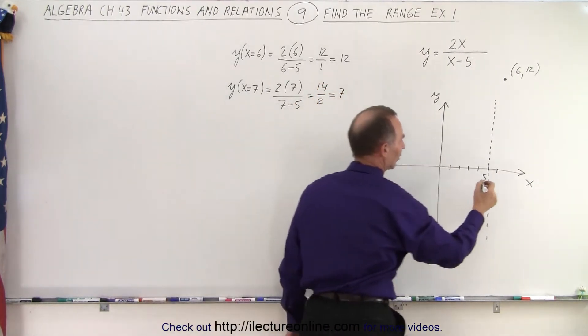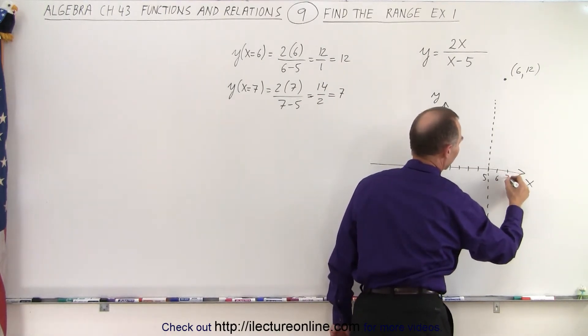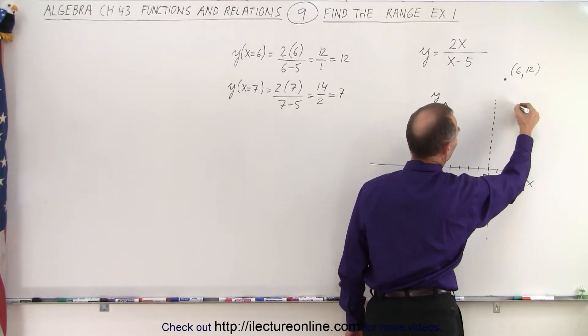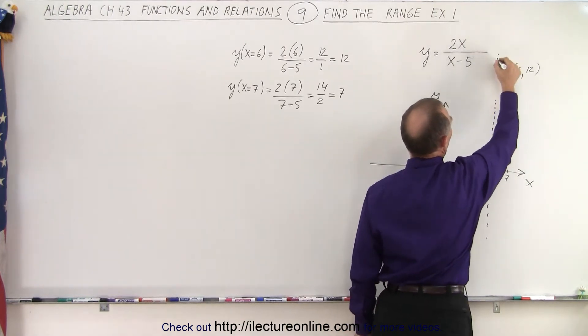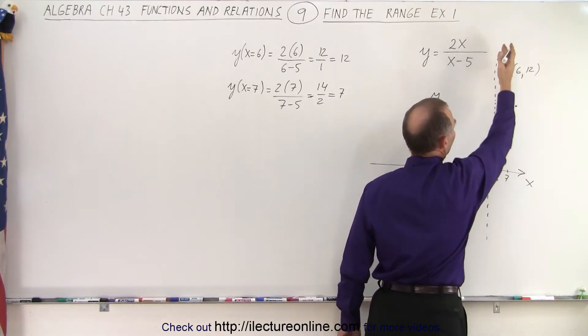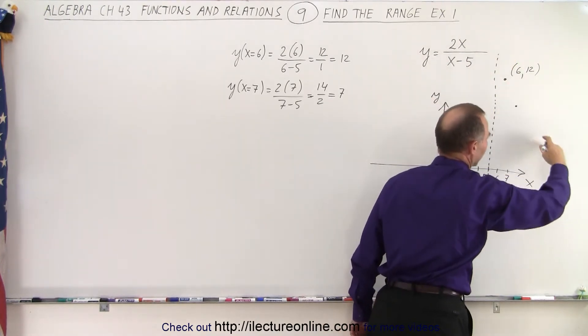So you can see that as x becomes 7, now y will be only 7. So instead of 12, y will be 7. So you can see that asymptotically, the curve goes up towards the asymptote, and then here it looks like it's going to come down this way.